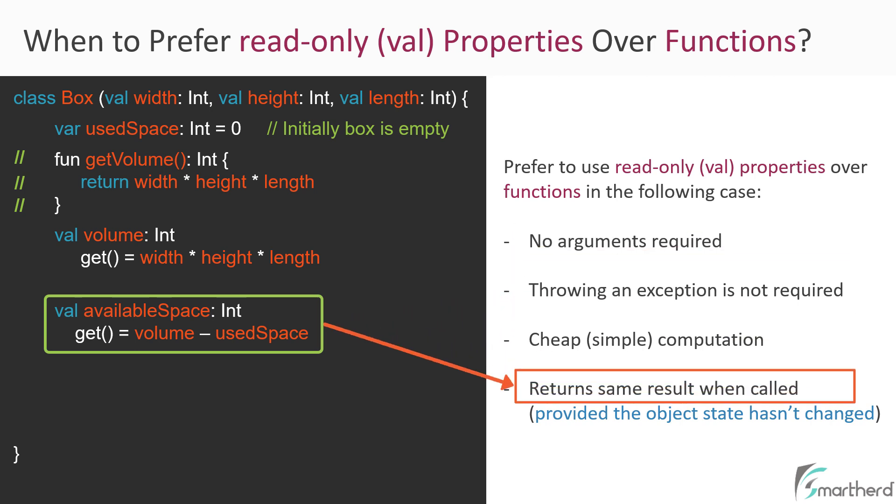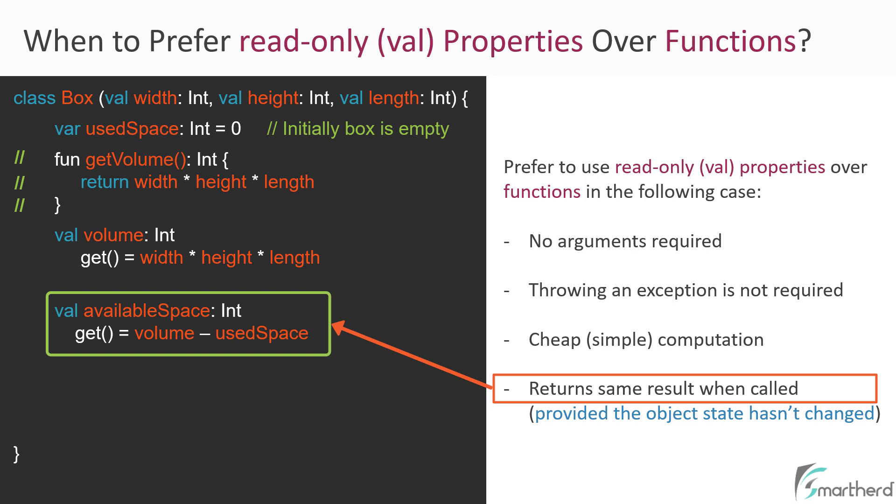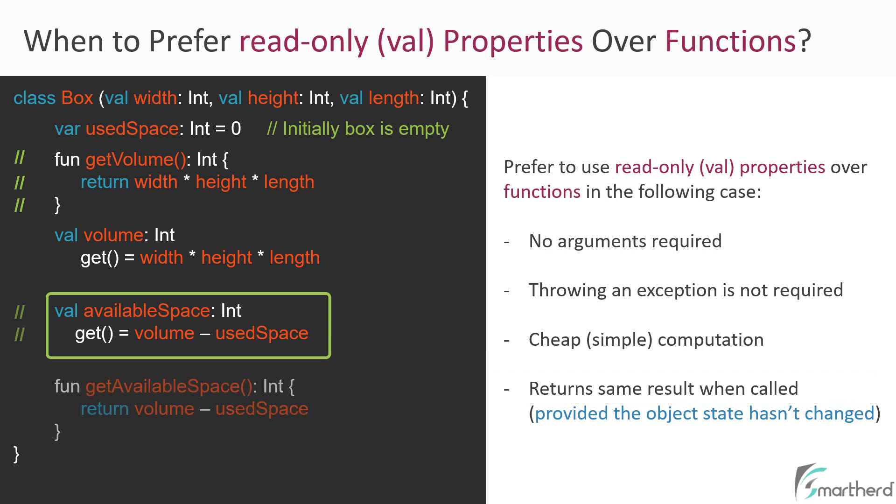That is, our property does not return the same result when called. So in this case, we can apply the rule in the reverse order. If these conditions are met, then we should prefer using the read-only val properties over the function. But since the last criteria is not met for our given declared property, we can apply the reverse rule and we should prefer using a function instead of this read-only property. So instead of having a separate property of available space, we should prefer using a function like this.